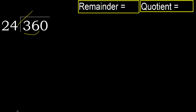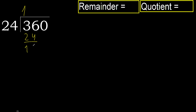48 is greater. Multiplied by 1: 24 is not greater. Subtract: 36 minus 24 is 12. Next.